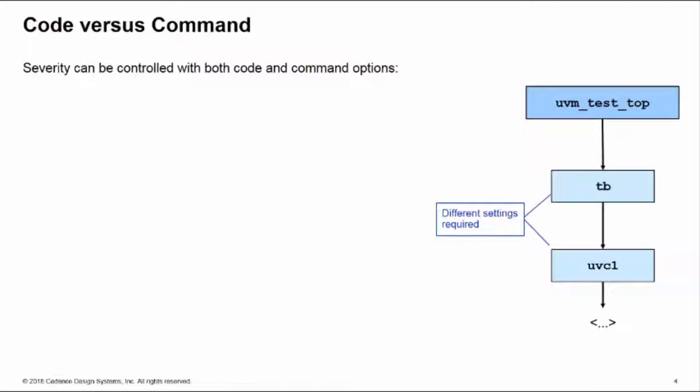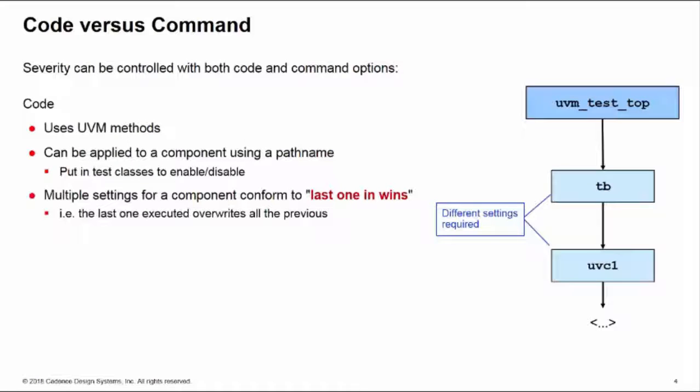I'll show you both code and command line options for controlling and changing severity. These behave in different ways so it's worth refreshing their differences. First, code options make calls to UVM methods. You can apply these to a component using a hierarchical path name.